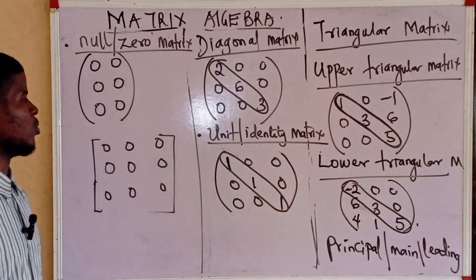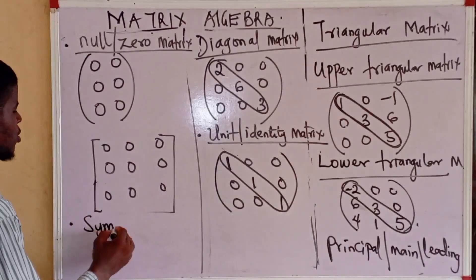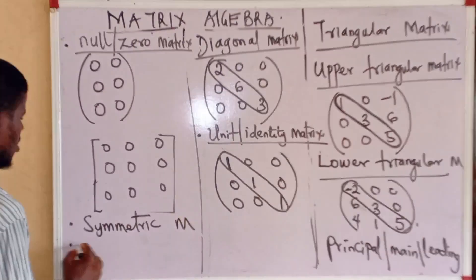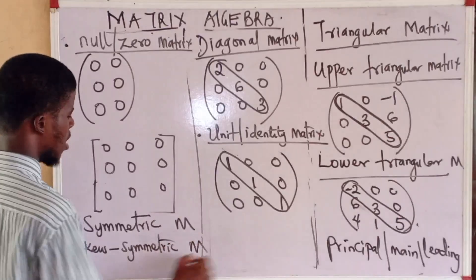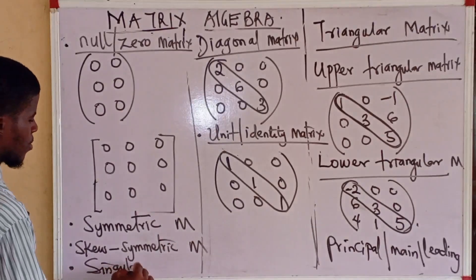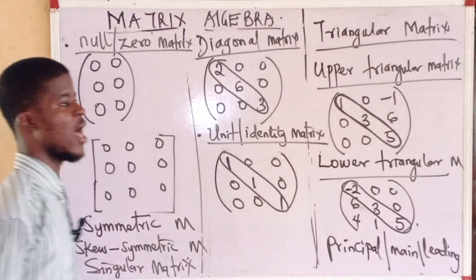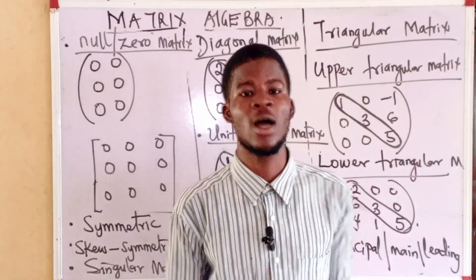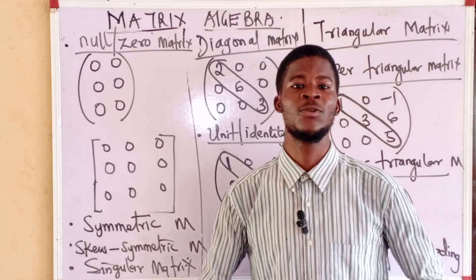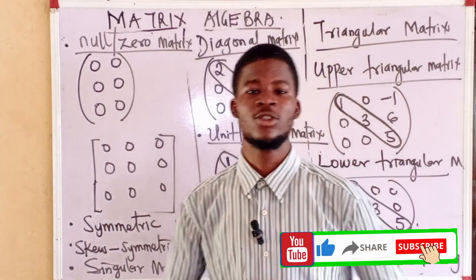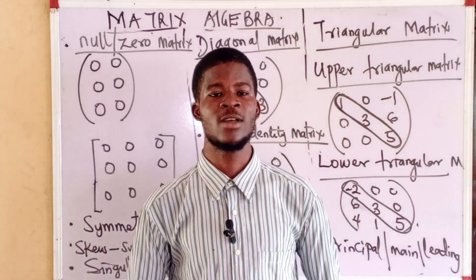We are going to consider some other special types of matrices later, like the symmetric matrix, the skew-symmetric matrix, and the singular matrix. We will talk about what they are and how to show that a matrix is symmetric, singular, or skew-symmetric. Thanks for watching this video — this is an introduction to the matrix. In the next video, I'm going to talk about the algebra of matrices. Support this channel by subscribing, liking, and sharing this video with your friends and course mates. I am the Complex Analyzer.